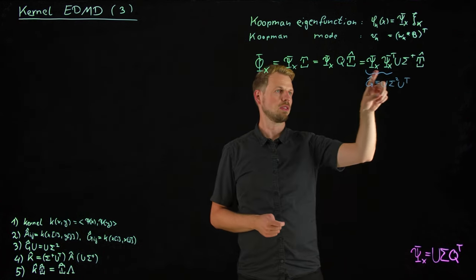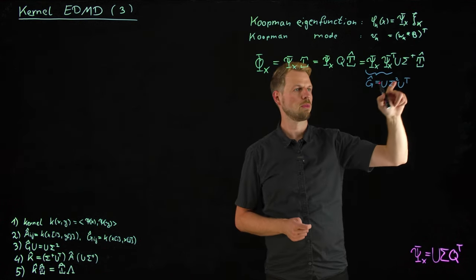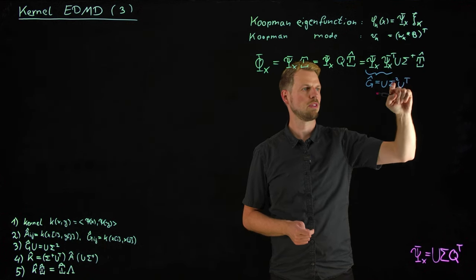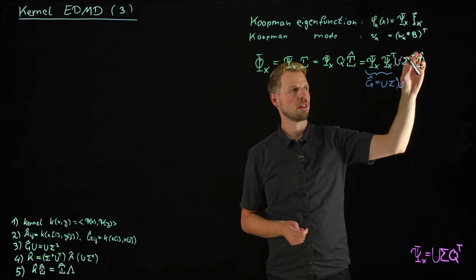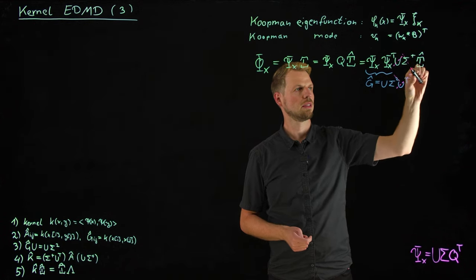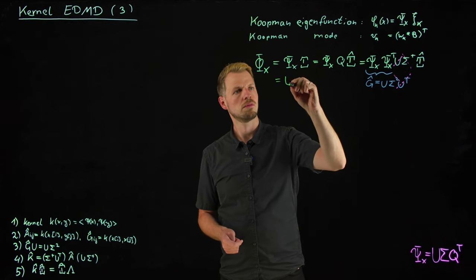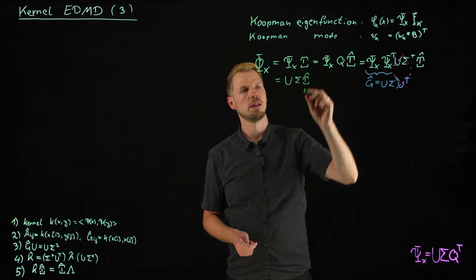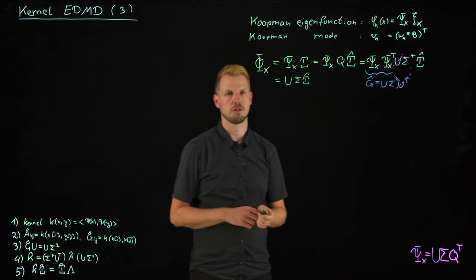And so this is very nice because now I have all quantities that I already know. And on top of this, I can cancel quite a few terms out. U sigma squared U transposed times U sigma inverse, which means U transposed and U cancel. And sigma squared and the sigma inverse means that I can cancel the second multiplication. And so what I'm left with is U times sigma times this eigenvector matrix, psi hat. And so all of these are very well known by equations three and five.